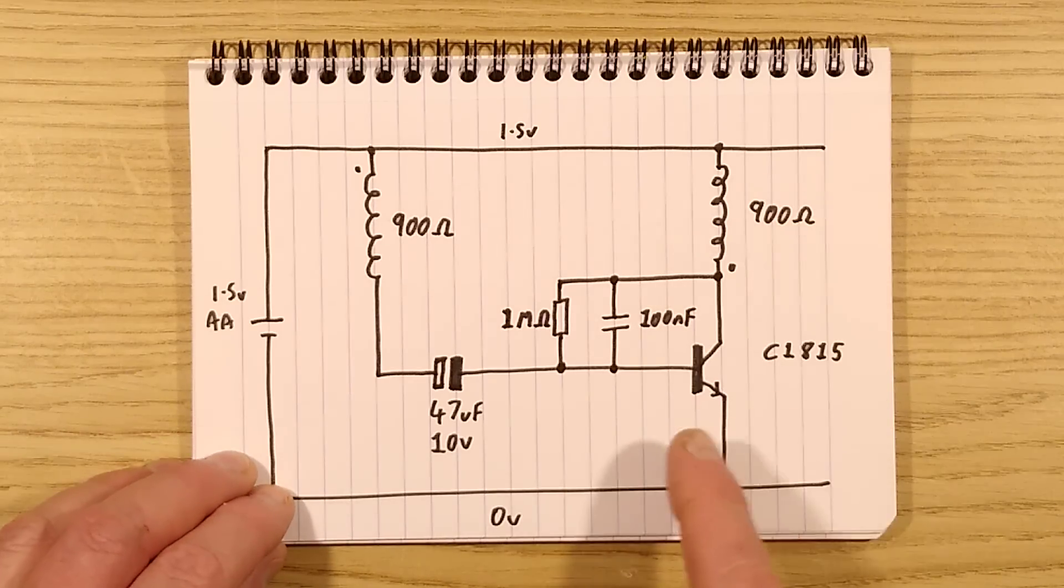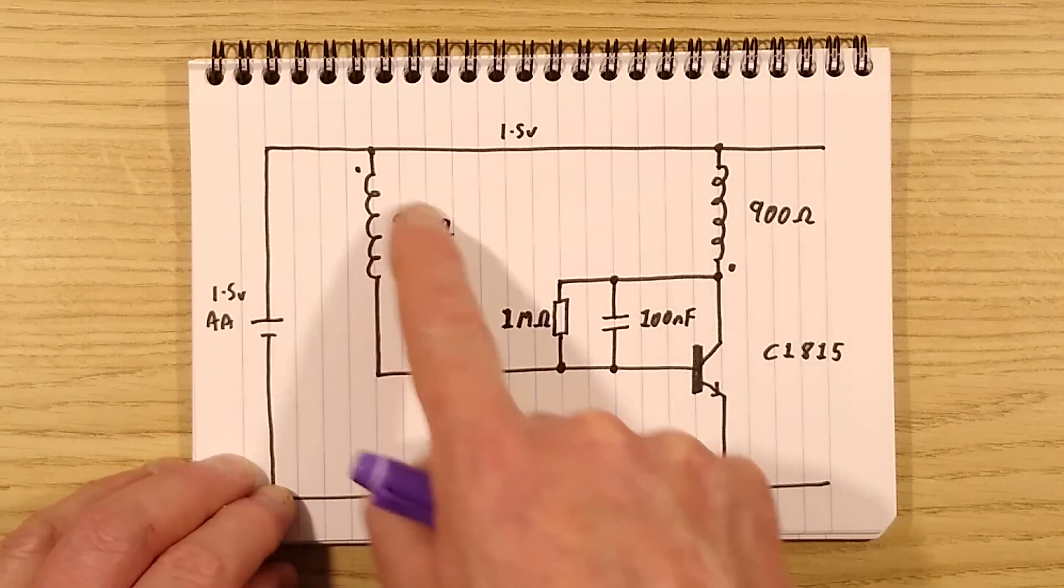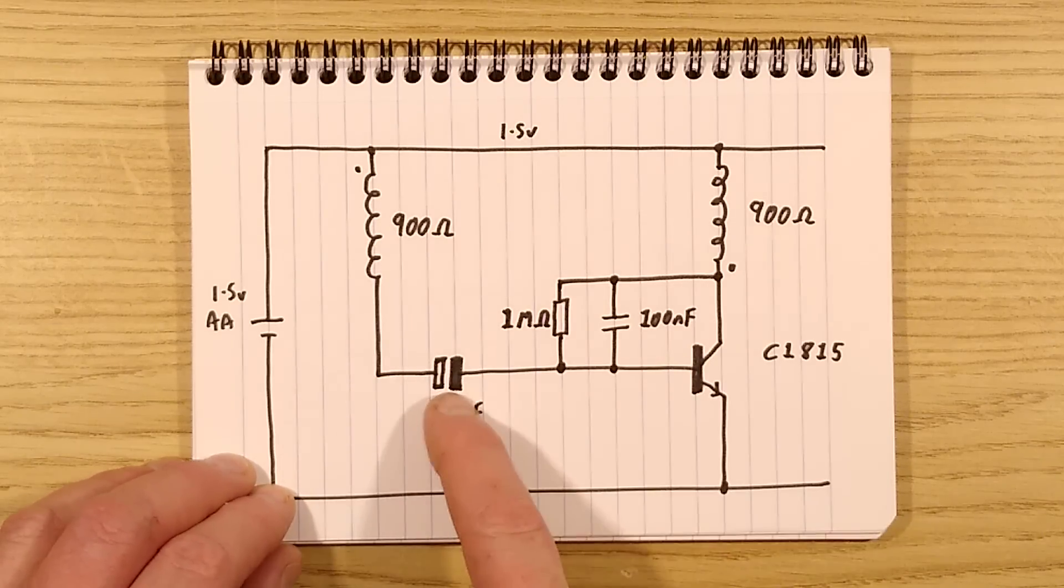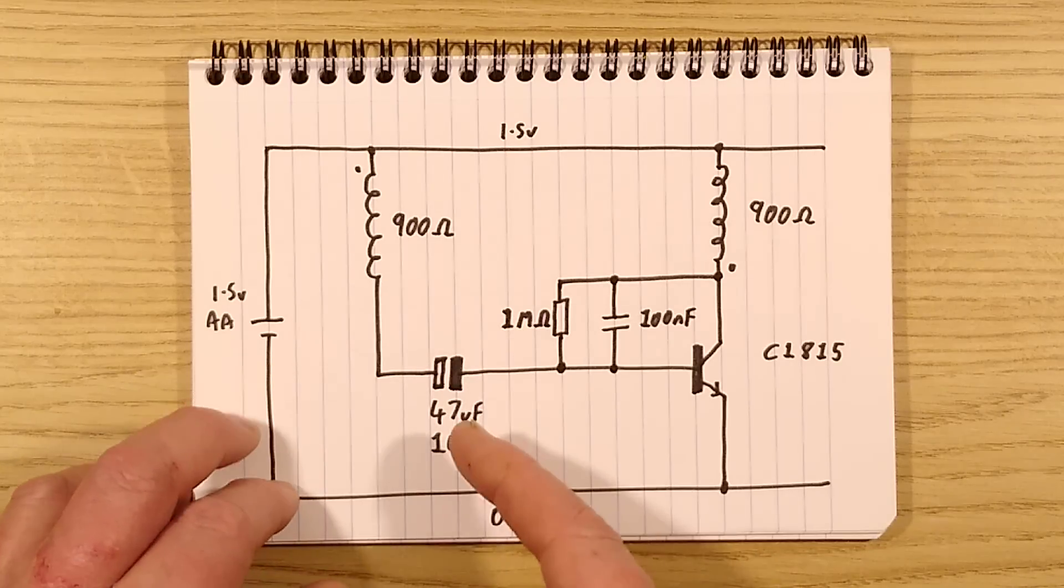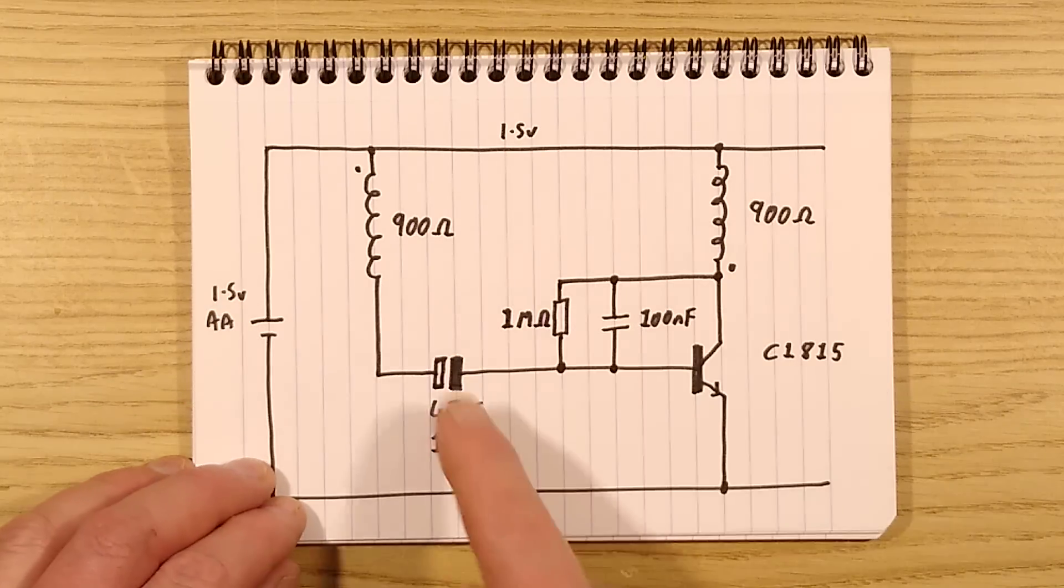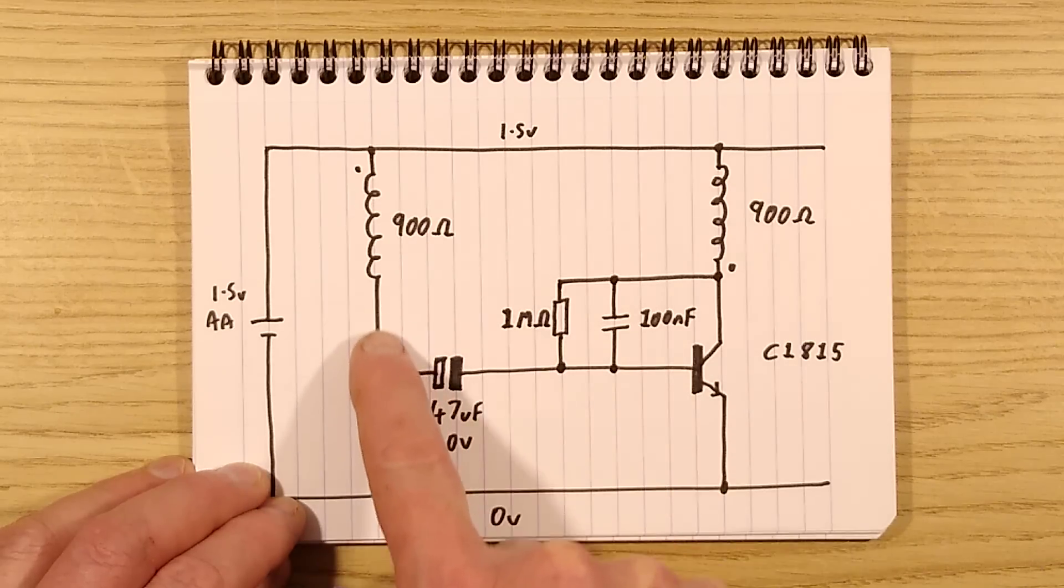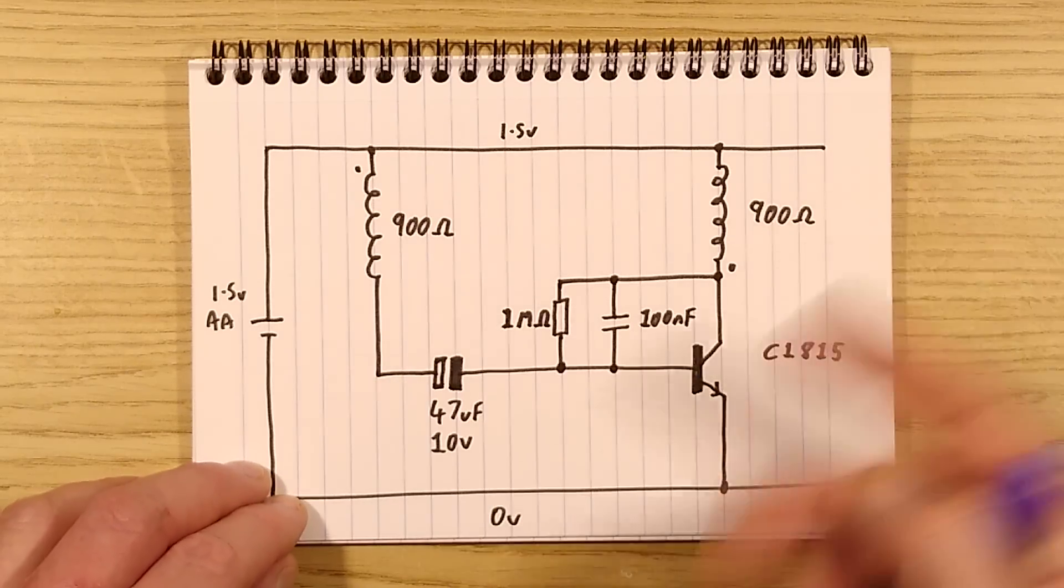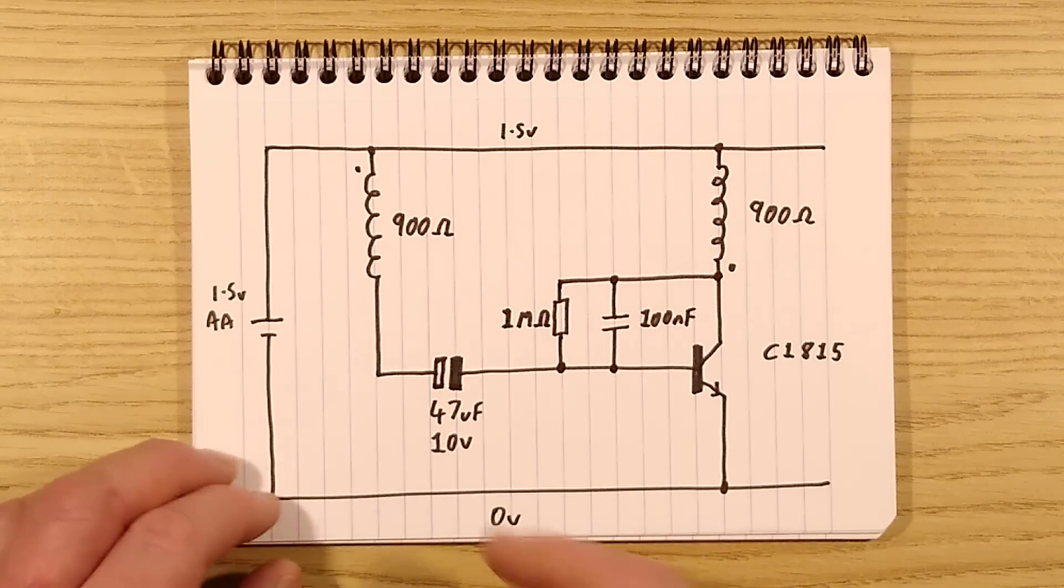When the magnet does pass it induces current in this coil and that is coupled capacitively to the base of the transistor. The capacitor has to be there for a couple of reasons. It rations the amount of current that can actually flow in each cycle, but also if that capacitor wasn't there the current would simply flow through this coil and straight into the base of the transistor and it would just turn on all the time, so it's needed for separation.